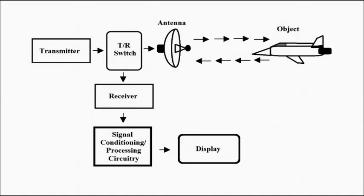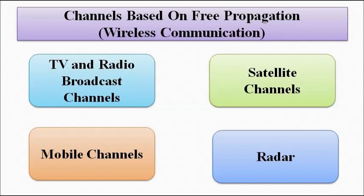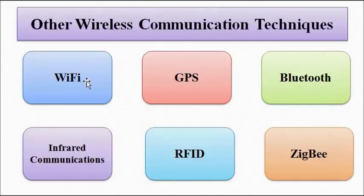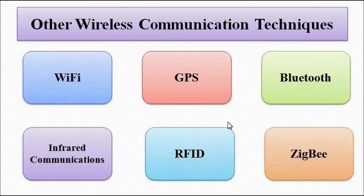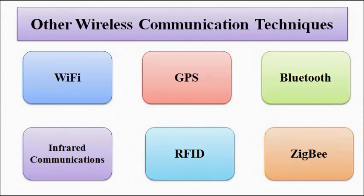These are the four main wireless communication methods. Apart from these, other wireless communication technologies include Wi-Fi, GPS, Bluetooth, infrared communication, RFID (Radio Frequency Identification), and Zigbee. These will be discussed in detail in the wireless communication section.